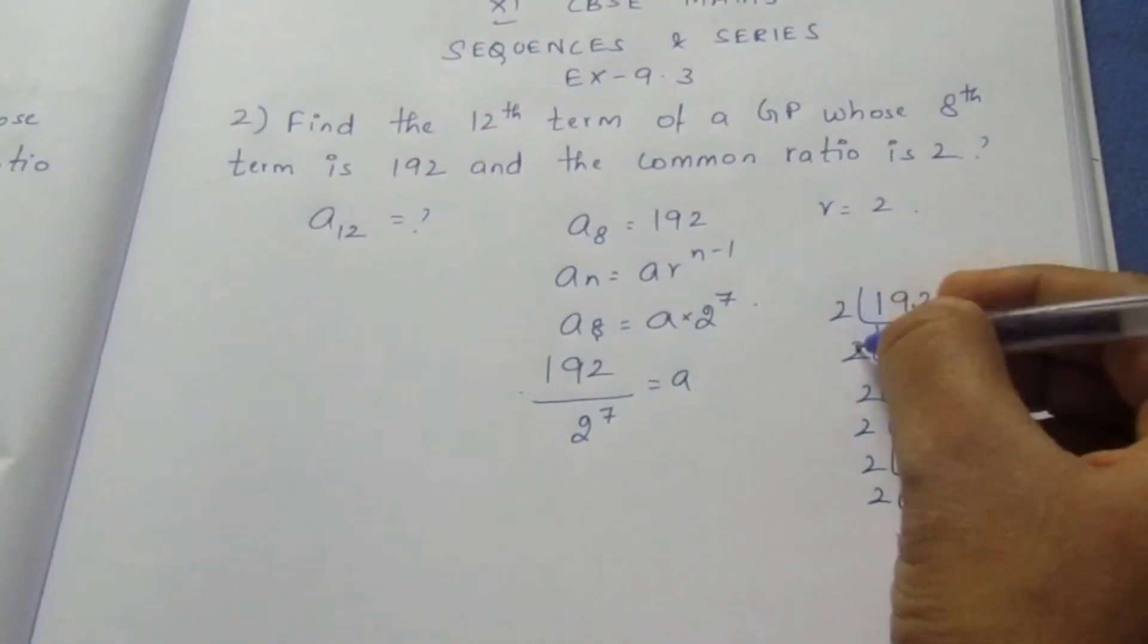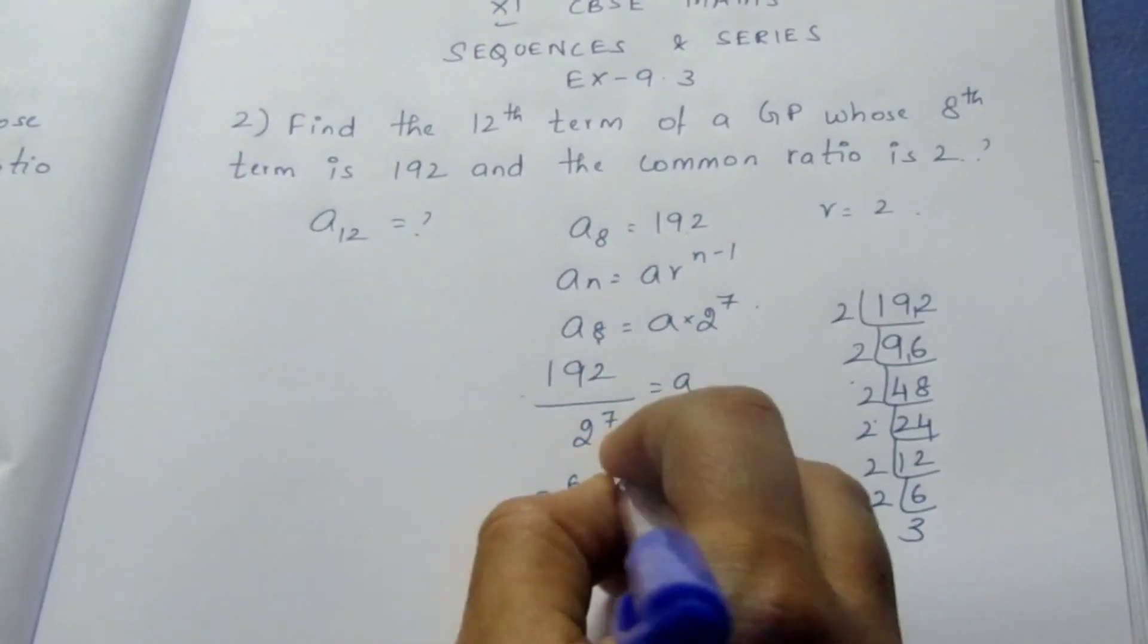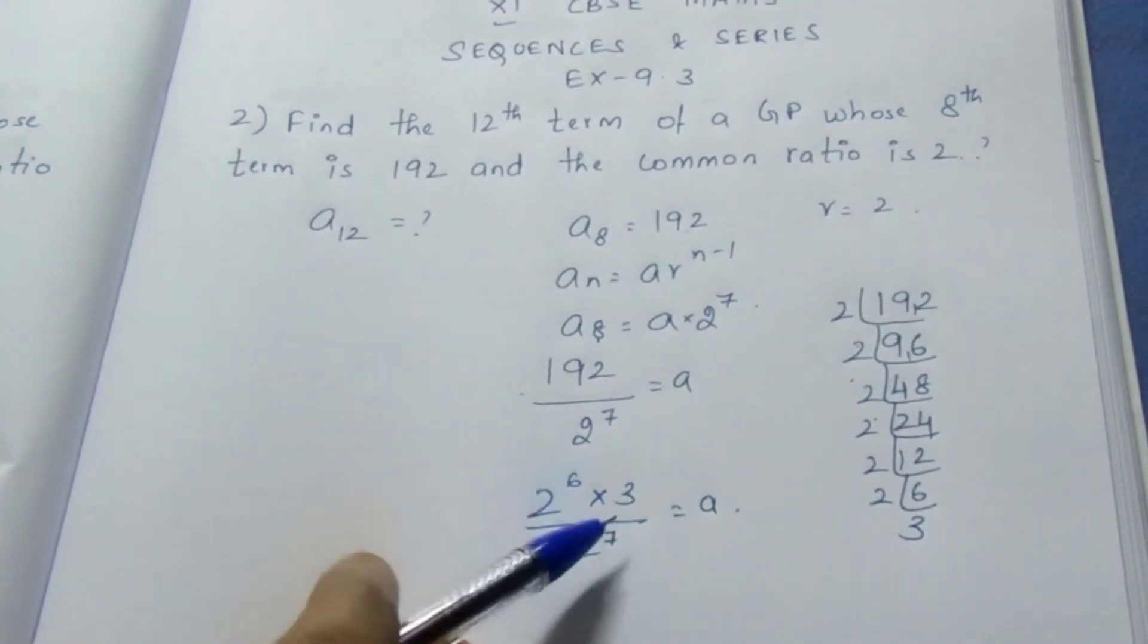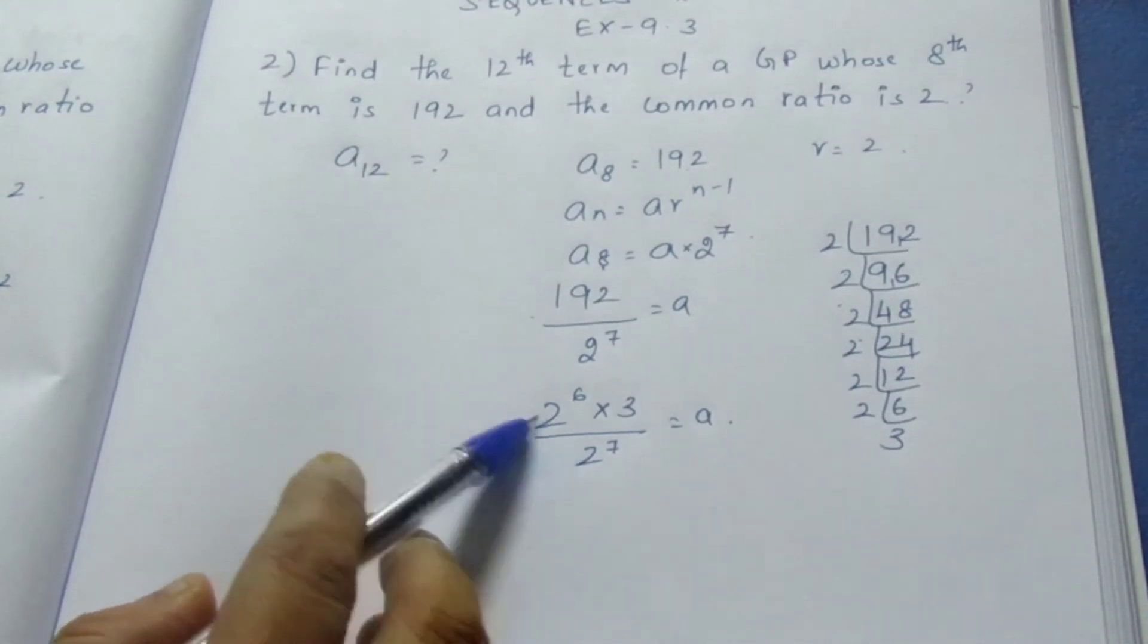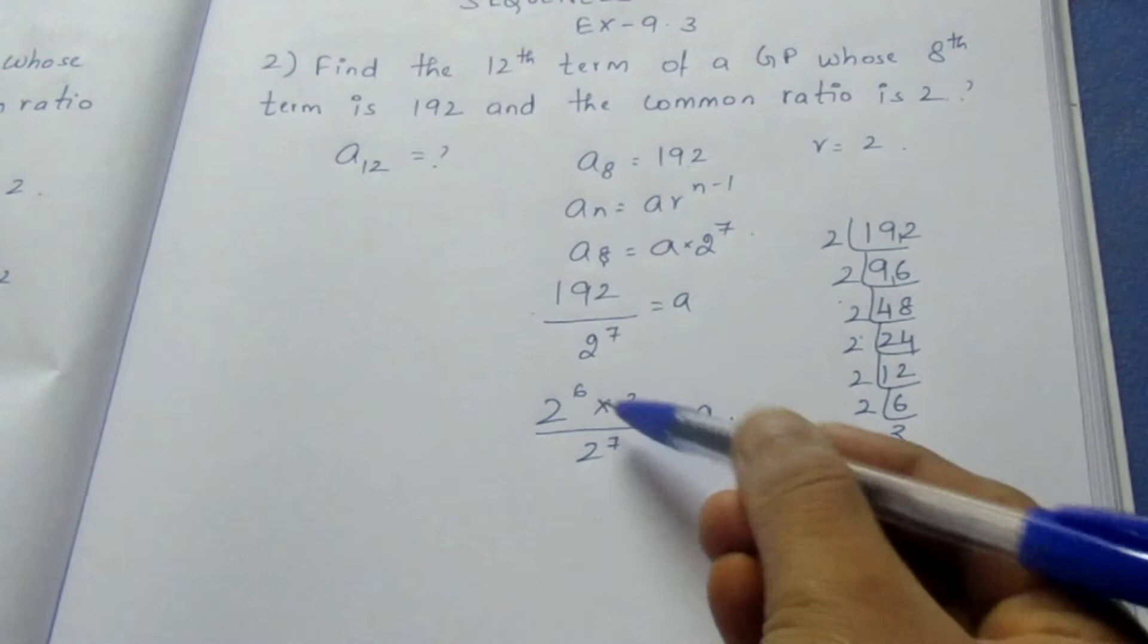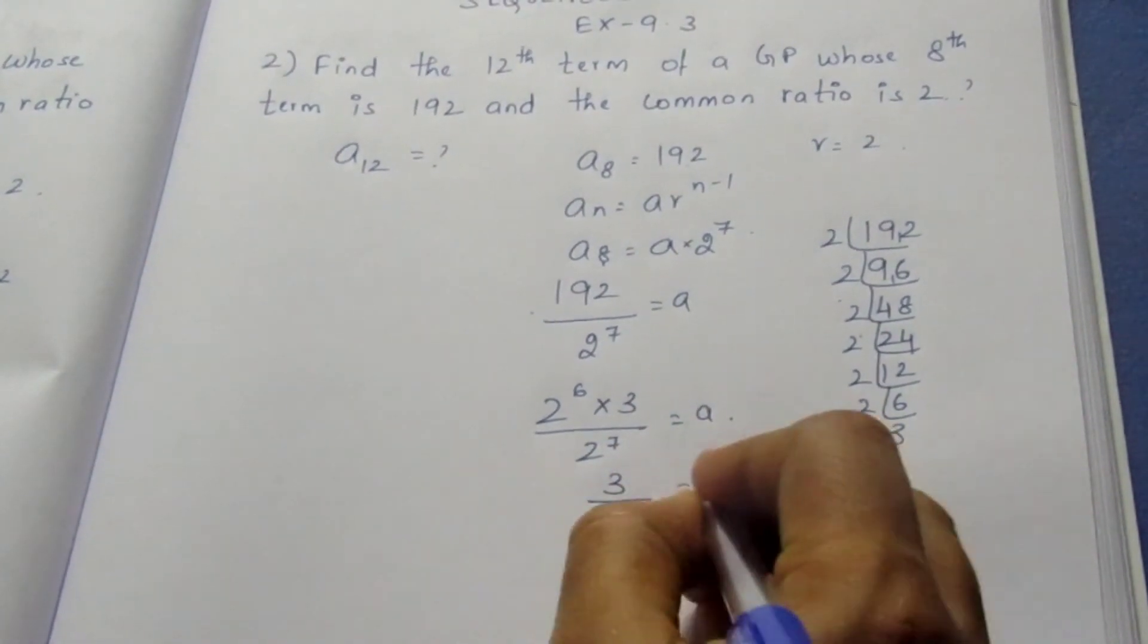So we have 1, 2, 3, 4, 5, 6 - that's 2^6 × 3. Therefore A = (2^6 × 3) / 2^7. You know that in division we can subtract the power for like terms. If I subtract 7 minus 6 in the denominator, it becomes 2^1, which is 2. So A = 3/2.